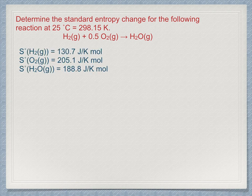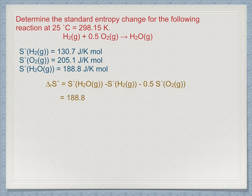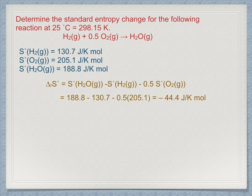Those values are for H2, 130.7, O2, 205.1, H2O, 188.8, all in joules per Kelvin mole. Calculate to obtain 188.8 minus 130.7 minus 0.5 times 205.1 is minus 44.4 joules per Kelvin mole.